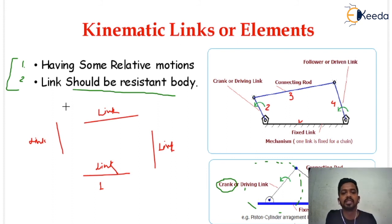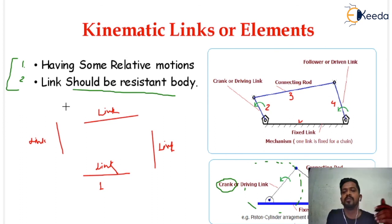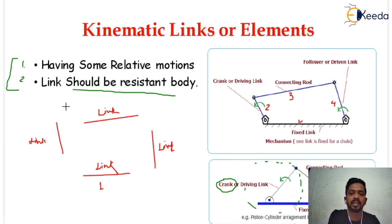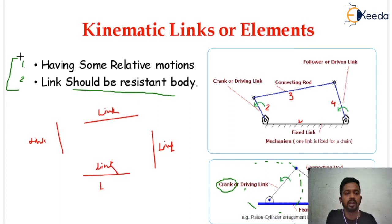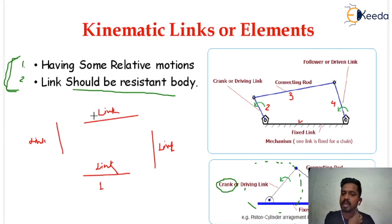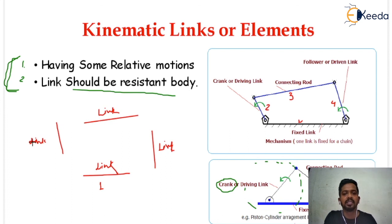In examinations they generally ask: what are the criteria for kinematic links or elements? You must remember two things — first, they must have some relative motion, and second, the link should be a resistant body. In Engineering Service Examinations, which generally contain multiple choice questions, you may get one or both statements, and both statements would be correct. I hope you now understand kinematic links or elements.